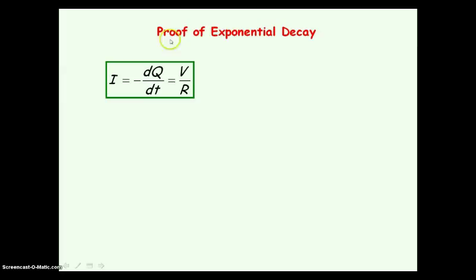I'm now going to prove the exponential decay. You do not need to know this for the syllabus or the exam, but if you're interested it's a really elegant proof. We start with the AS definition of current, which is the rate of flow of charge: dQ divided by dt. The reason why we have a minus sign is because when time increases, both the current and charge decrease. So to show that mathematically, we need that minus sign.